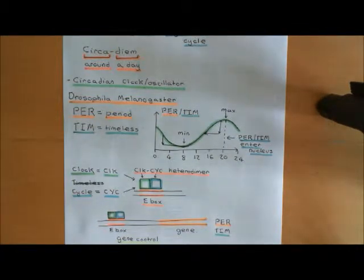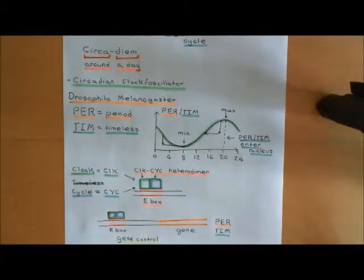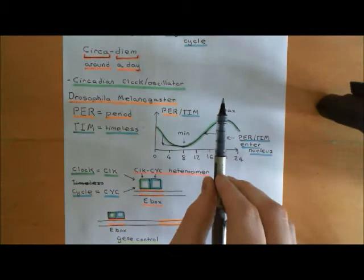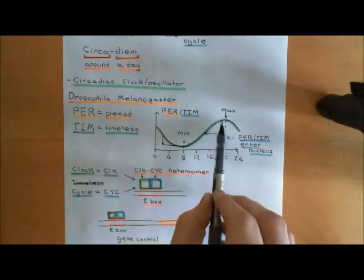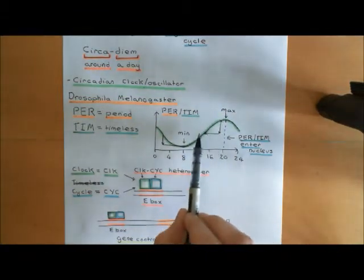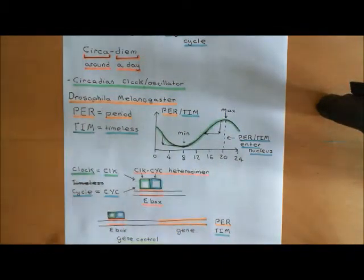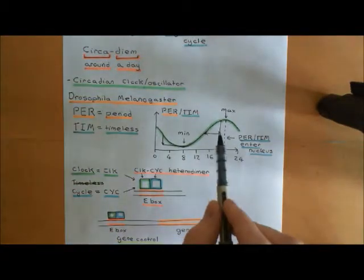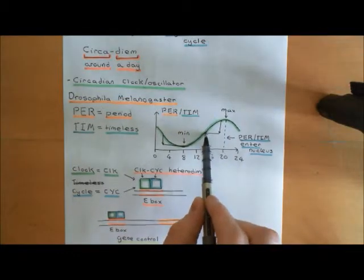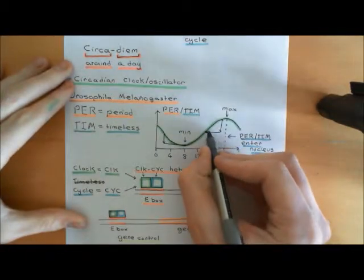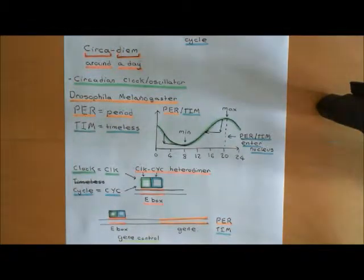We've seen that there is a way for recalibrating this period-timeless system if it comes out of synchrony with the light-dark cycle, and that's through these cryptochrome proteins. When you have bright light, that will activate cryptochrome proteins, which will accelerate the degradation of period and timeless proteins. So if the circadian clock thinks it is early evening — at this portion of the circadian clock within the cell — and then you suddenly get very bright light indicating the real time is more around 12 o'clock in the day, that will cause period and timeless levels to go down, effectively moving the circadian clock backwards to a time closer to midday.